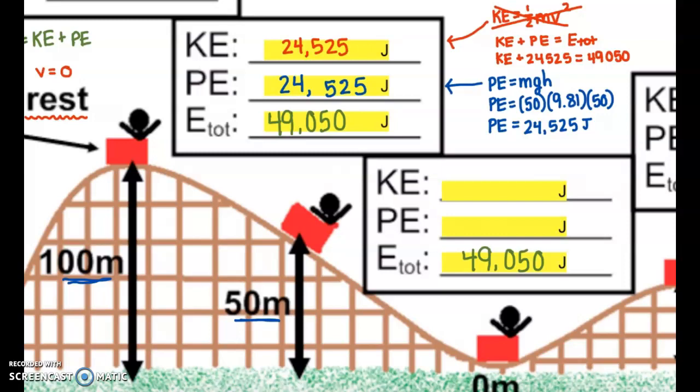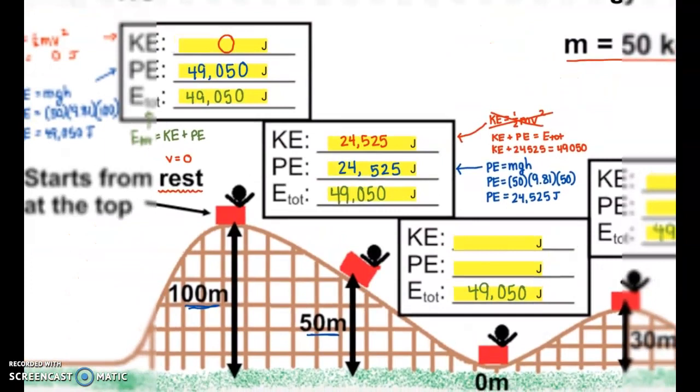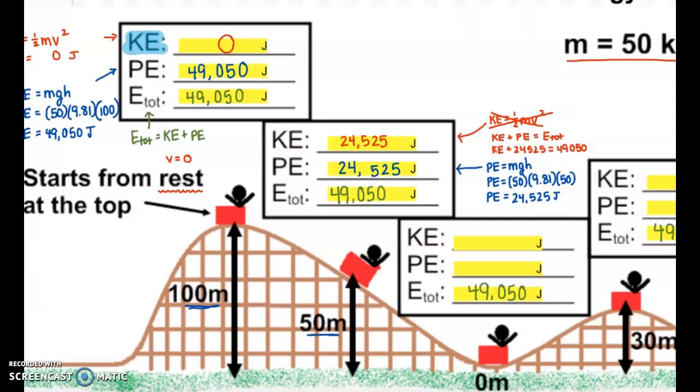If we were asked to find the velocity, now we could go back to kinetic energy equals one-half mv squared and solve for velocity. As a quick check, kinetic energy plus potential energy still equals total energy. We are showing conservation of energy. Energy has transferred between forms. We used to have zero kinetic energy, and now we have some kinetic energy, 24,525 joules. We used to have a lot of potential energy, and now we have less, because that potential energy that we lost went to the kinetic energy we gained.